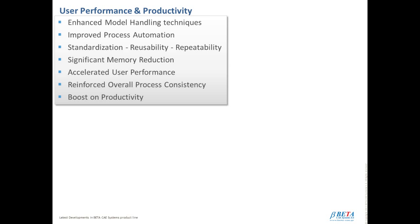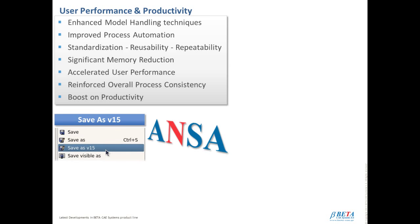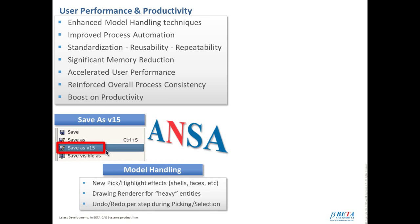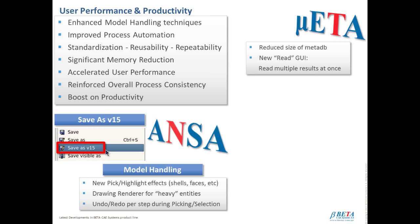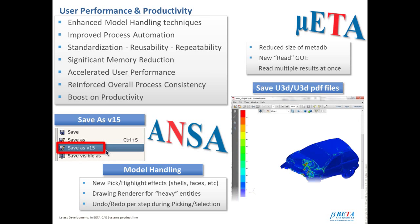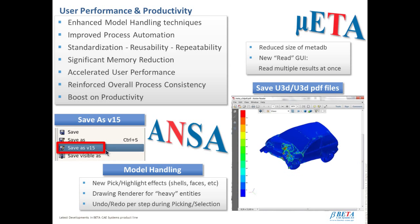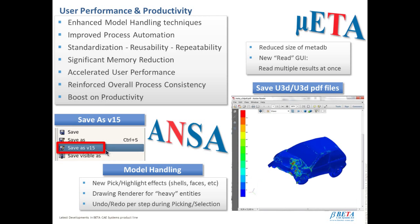Let's see some examples towards this direction. In META post-processor, for example, we have the new option to provide full compatibility between major versions, as well as advanced model handling techniques. In META post-processor, we have now reduced size of META-DB, as well as a new read GUI, through which the user can read multiple results at once. As well as the option to save U3D and U3D PDF files, which can directly open from Acrobat Reader. In these files, the user can pan the model and also animate it.